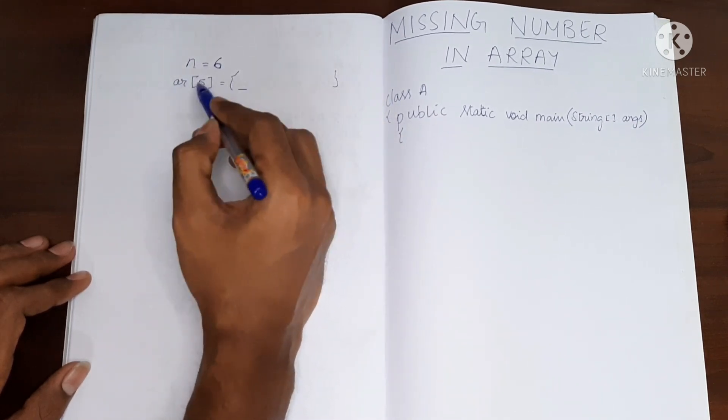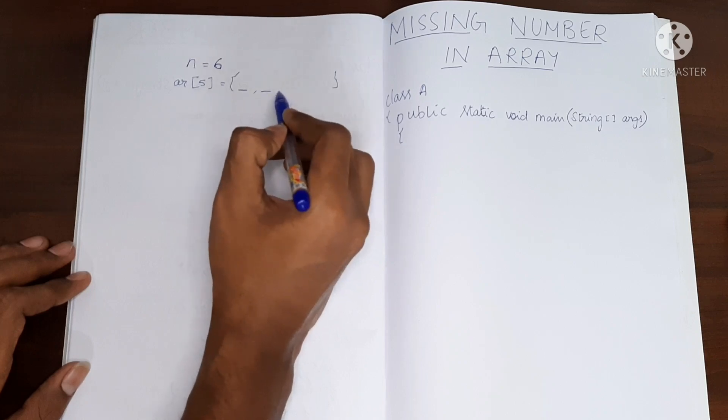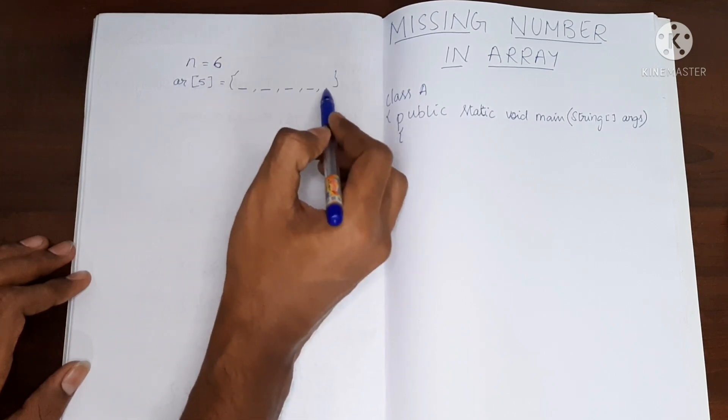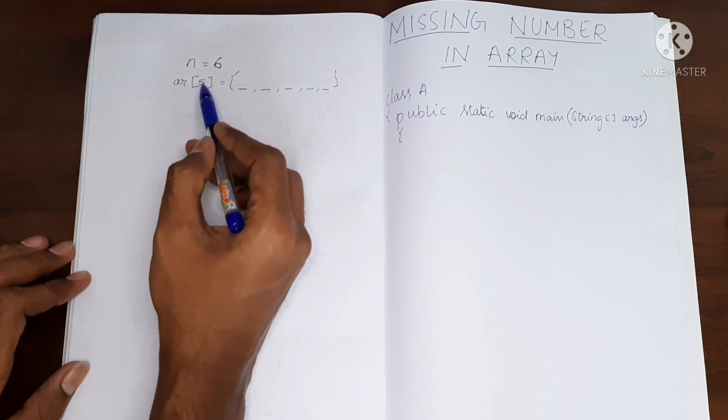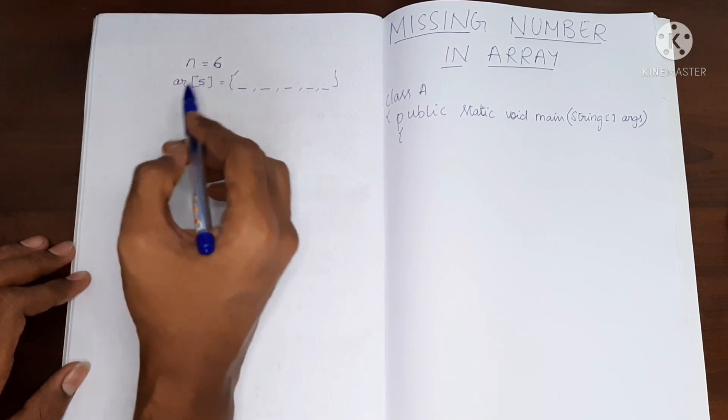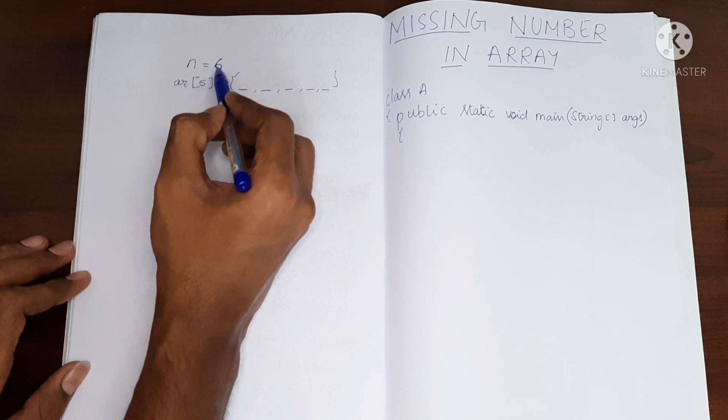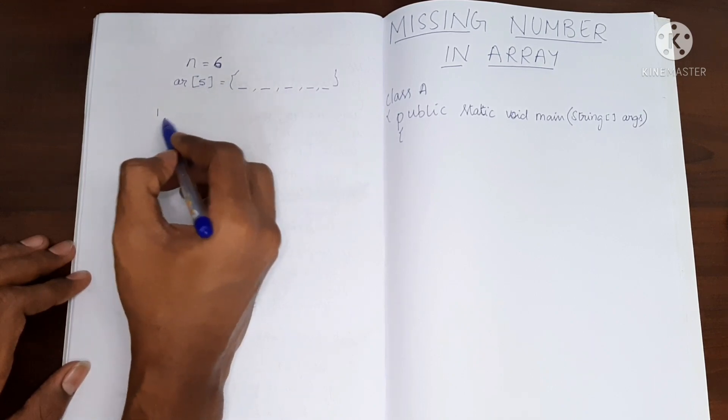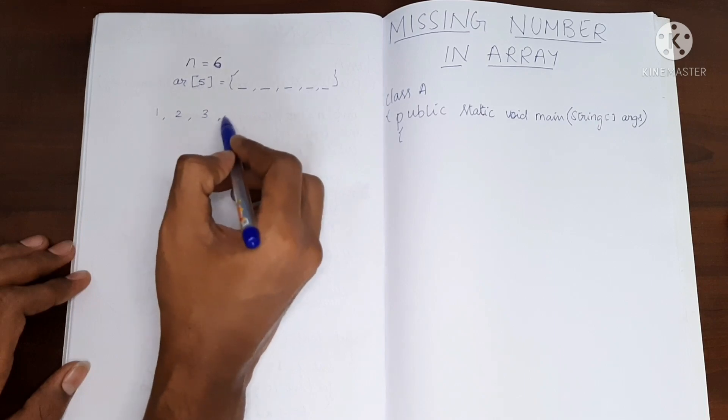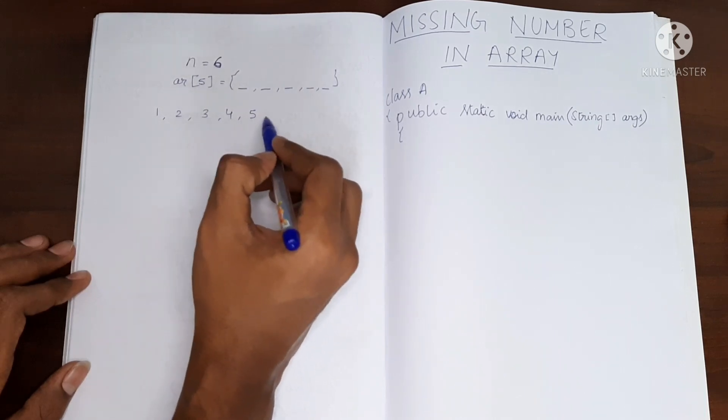This array will have 5 elements: 1, 2, 3, 4, 5. This array will have 5 elements and those elements are - n is 6, right? So the values will be from 1 to 6, it will be 1, 2, 3, 4, 5, 6.